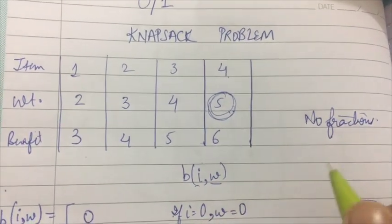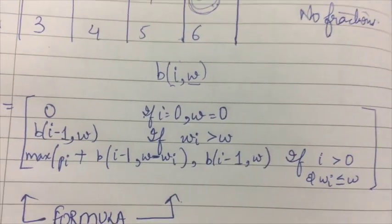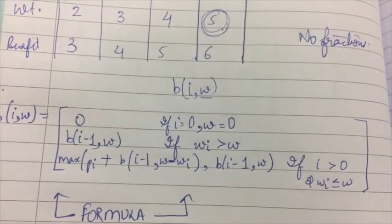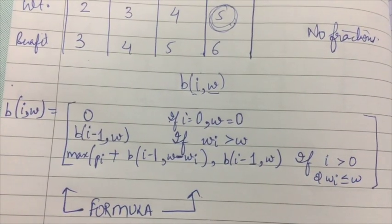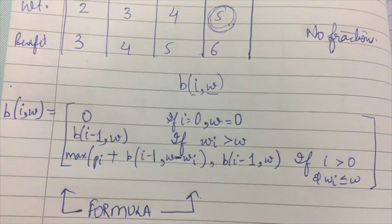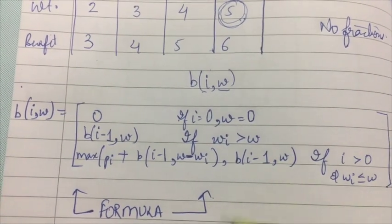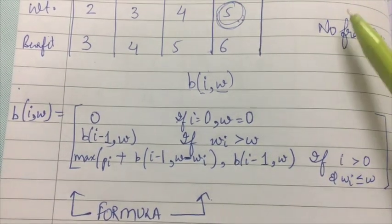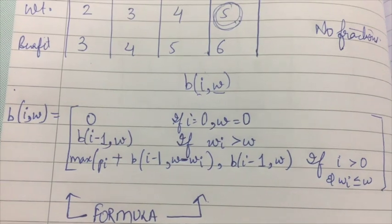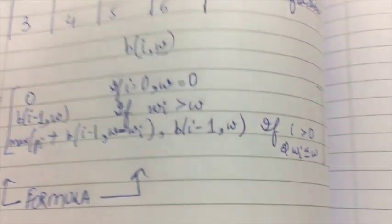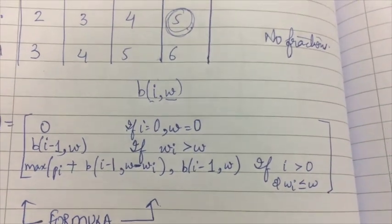We have a formula for this. Cramming a formula is difficult, and personally I am weak at it, but if you have to write an algorithm you obviously have to learn it. However, if you just have to solve a question, there is a direct method, since there are not so many entries and you can easily determine what the values for B[i, w] will be.